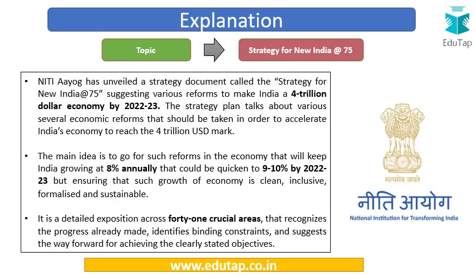This new strategy document has been recently unveiled by NITI Aayog. It suggests various reforms in order to make India a four trillion dollar economy, to be achieved by 2022–23. The strategy plan talks about various reforms needed to accelerate India's economy so it can reach this four trillion USD mark. The main idea is to pursue reforms that will keep the growth rate at around 8% per annum, which could be boosted to 9–10% by 2022–23.